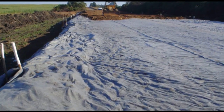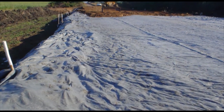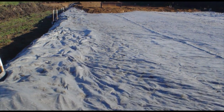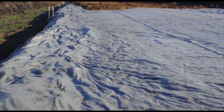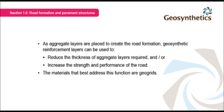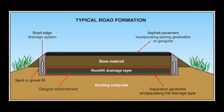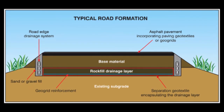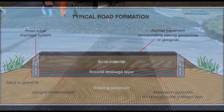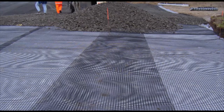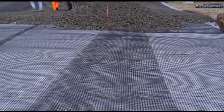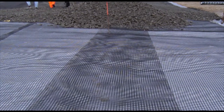The grade of geotextile chosen will generally be directed by road authority specifications. For example, a multi-lane highway with heavy vehicle loads on soft soils will require a different grade of geotextile to a single lane secondary road on firm soil. As aggregate layers are placed to create the road formation, geosynthetic reinforcement layers can be used to reduce the thickness of aggregate layers required, and/or increase the strength and performance of the road. The materials that best address this function are geogrids. Geogrids provide a stronger and more stable structure by interlocking with the aggregate material. Like geotextiles, this product is also supplied in rolls. Here we see aggregate being placed on top of a geogrid in a highway. The design and grade of geogrid selected needs to address the type of aggregate rock being used, vehicle loads, construction forces and strength of underlying soil.